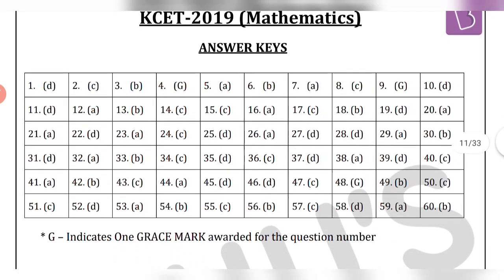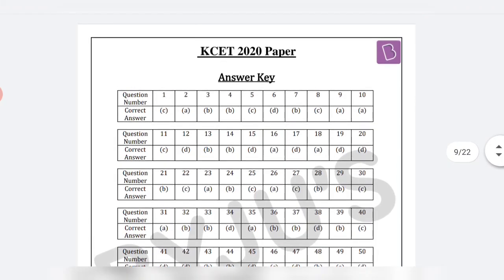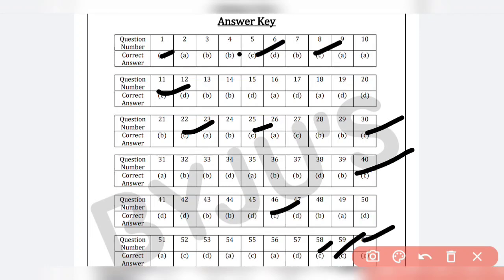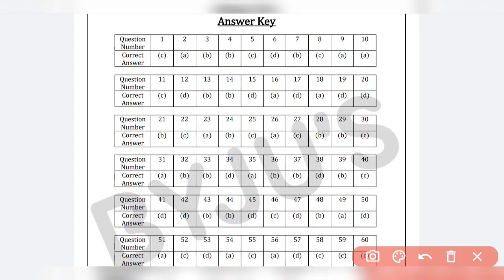I strongly recommend option C. Looking at the 2022 mathematics paper solution — checking option C: 1, 2, 3, 4, 5, 6, 7, 8, 9, 10, 11, 12, 13, 14, 15. C is 15. I recommend C. You can search for the previous question paper with the solution, download it, and analyze it.